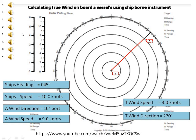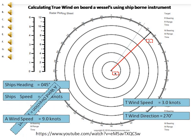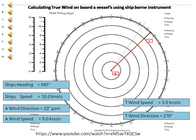Step 4: Plot the apparent wind direction obtained from the anemometer, measured from the chart scale. Step 5: Plot the apparent wind speed obtained from the anemometer, measured from the chart scale, and label as M. Step 6: Connect M to R with a line.